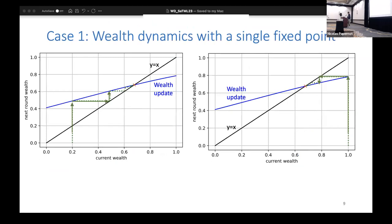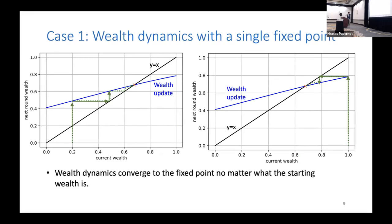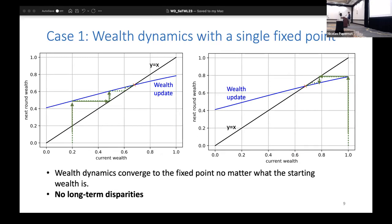If you're in the regime where you have only one fixed point, it doesn't matter what your starting wealth is. For example, if you begin at 0.2, you end up somewhere at 0.5, then you project that and you're going somewhere to 0.6. Similarly, if you begin high up there, you end up at the same fixed point. So this is to say there are no long-term disparities between populations of different starting wealth.